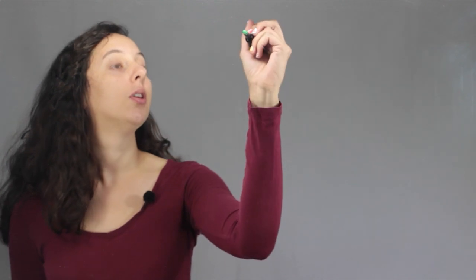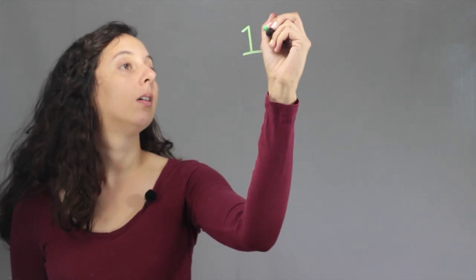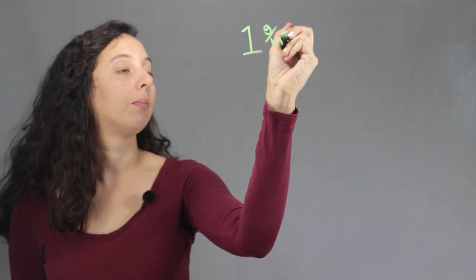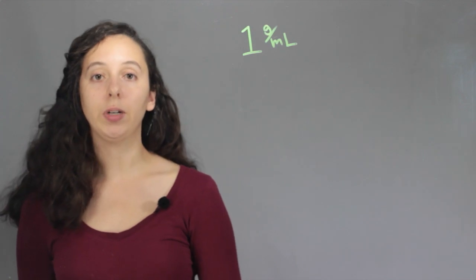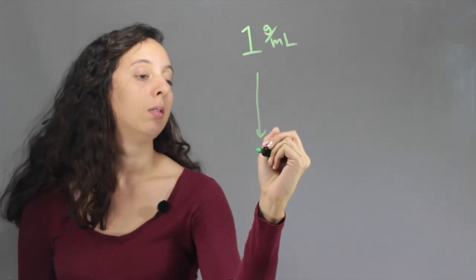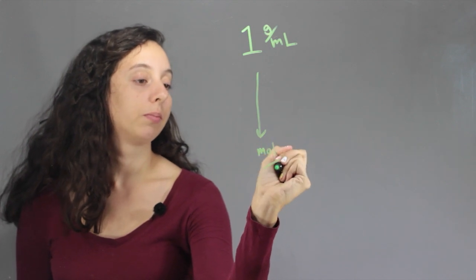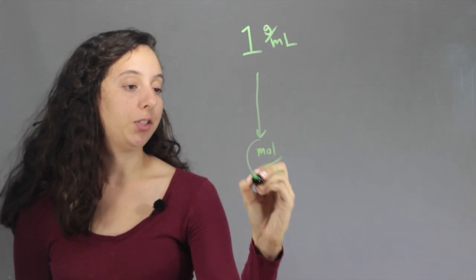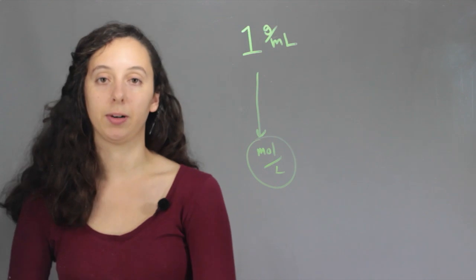Now water's density is 1 gram per milliliter and we need to get to molarity, and molarity's units are always in moles per liter. So once we have these units, we know that we're done with that problem.